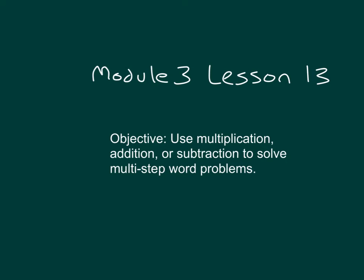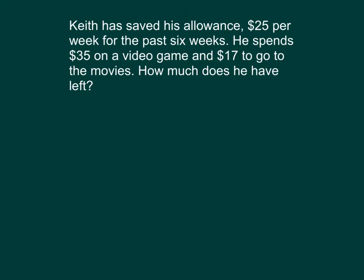Use multiplication, addition, or subtraction to solve multi-step word problems. Let's take a moment to read this problem together. Keith has saved his allowance, $25 per week, for the past six weeks. He spends $35 on a video game and $17 to go to the movies. How much does he have left?